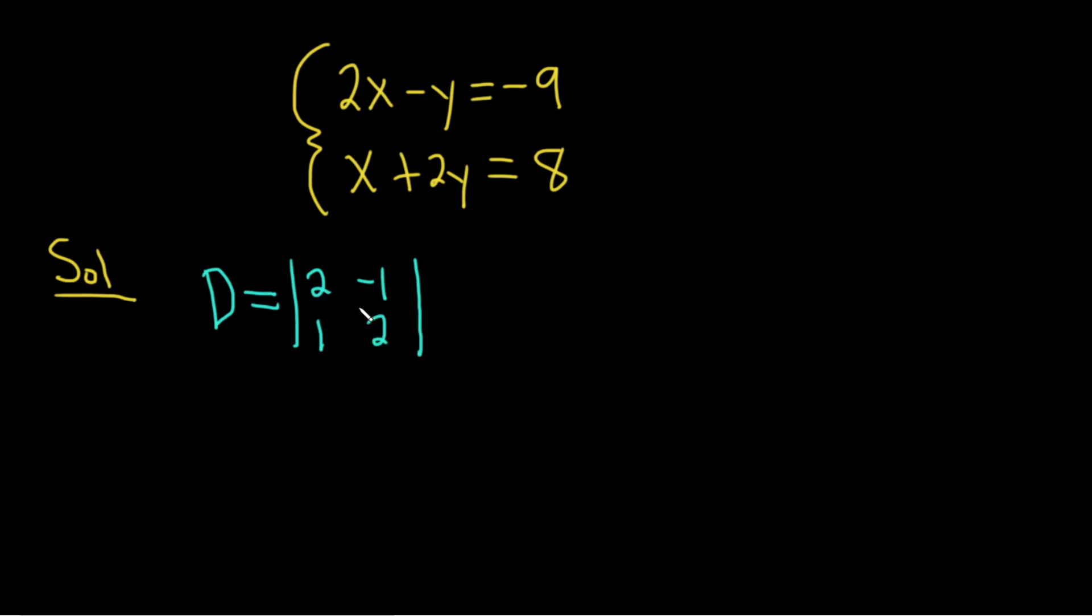And to compute 2 by 2 determinants, all you do is you multiply. That's 2 times 2. Then you subtract, and then it's negative 1 times 1, like that. This will be 4 plus 1, which is equal to 5.